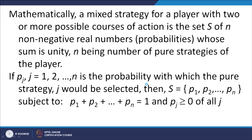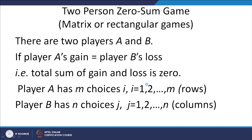If we denote by p_j, where j goes from 1 to n, the probability with which pure strategy j would be selected, then S = (p1, p2, ..., pn) subject to p1 + p2 + ... + pn = 1 and all p_j ≥ 0 for all j. With this, let us consider the first case: the 2-person zero-sum game, also called the matrix game or rectangular game.